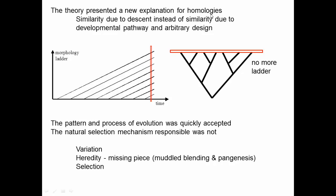Homologies are things that are similar because of descent, rather than due to current function. It was known that many things were similar in ways that didn't make sense — for example, four limbs all sharing the same basic arrangement of bones even though they do very different things. Prior to evolution, ideas included some required developmental pathway, or simply 'that's just the way it is.' An evolutionary process provides a real explanation for homologies, and that's one of the major accomplishments of this initial proposed evolutionary theory.